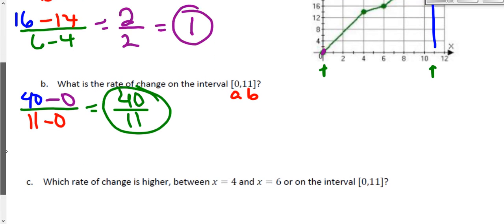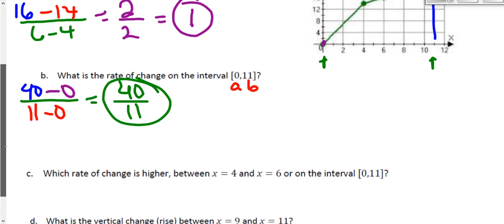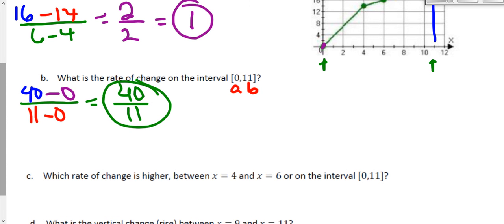For the final part, it's asking, oh, there's two more questions. Which rate of change is higher? So the first interval from 4 to 6 or the second interval from 0 to 11. 40 over 11 is larger than 1. 11 over 11 is 1. This is almost 4 times bigger. So which one's higher? That's going to be the interval from 0 to 11. 40 over 11 is much bigger than the number 1. So that interval is higher.